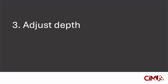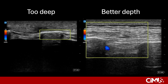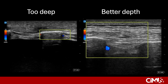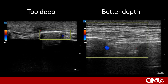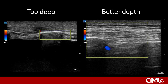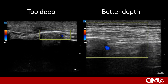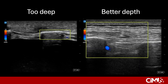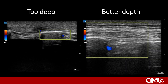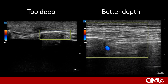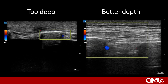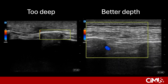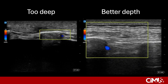Next, adjust depth. It is important to adjust the depth to ensure that the skin and tissues above the peritoneum or the pleural line are easily visualized. The video on the left has too much depth, making the skin, soft tissues, and vessel beneath the rib quite small. By decreasing depth, as shown in the image on the right, this allows for much better visualization of relevant structures.